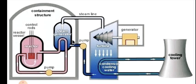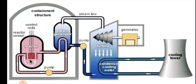The water is then pumped back to the boiler by the pump, and the cycle repeats. In the nuclear reactor, control rods are present. These control rods are made up of cadmium, boron, or hafnium. They can be moved up and down automatically to control the rate of the nuclear chain reaction, so as to increase or decrease the temperature as required.